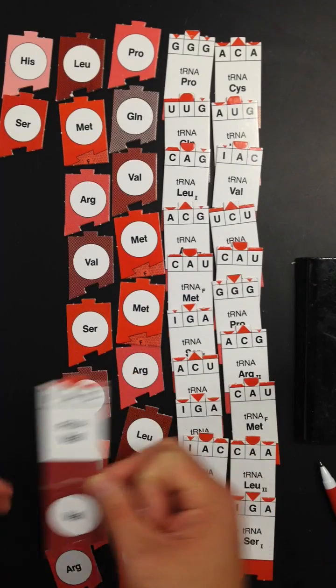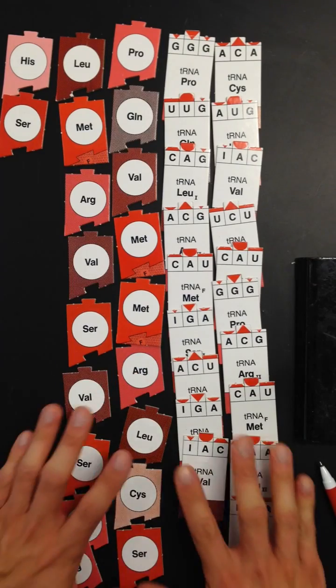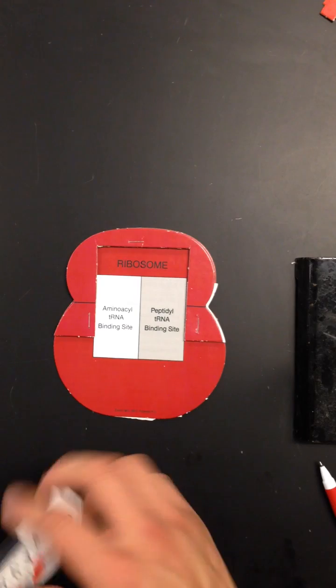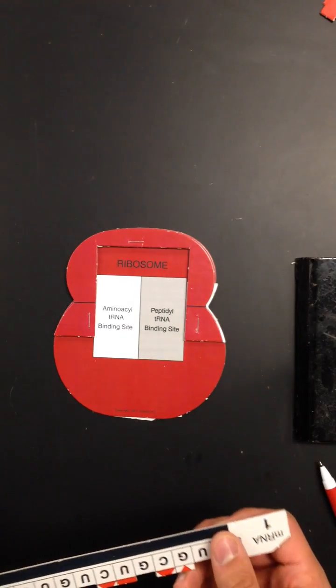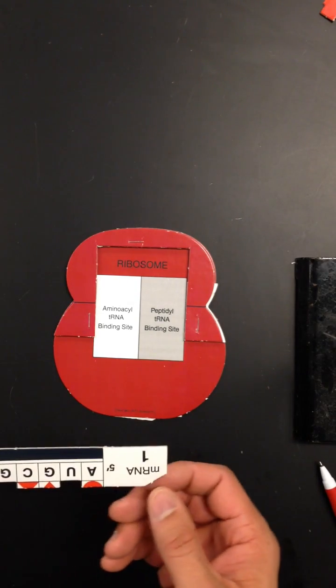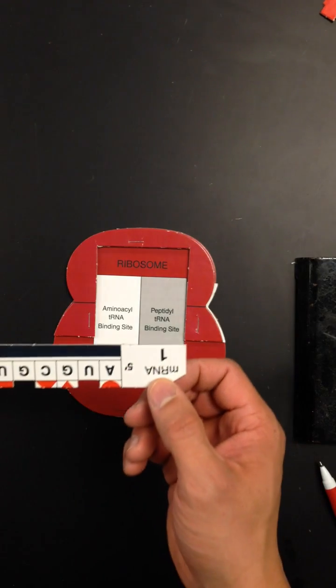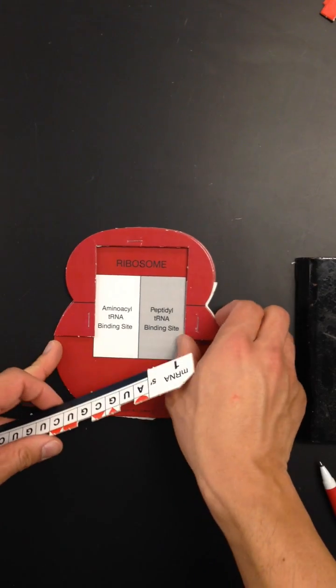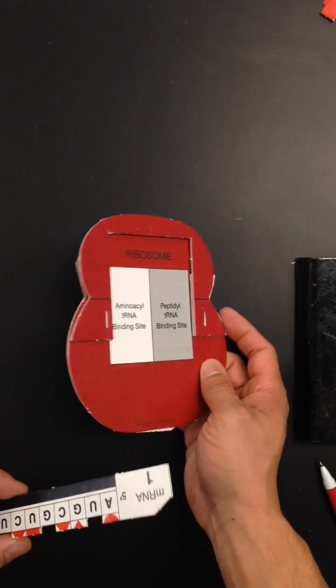Let's get started on how to do this lab. First things first, you're going to take your ribosome and you're going to take your messenger RNA strand 1, and it's going to look like this. You're going to have the number 1 at the end of it.